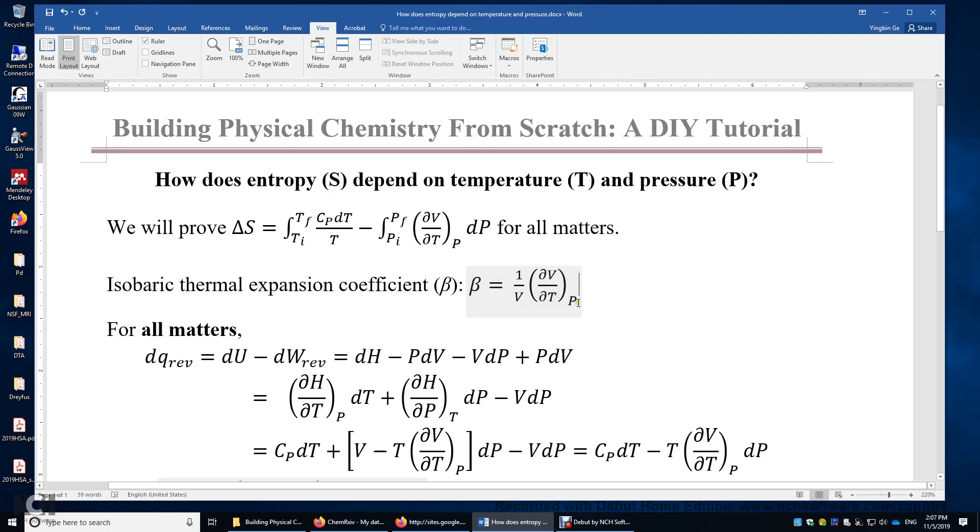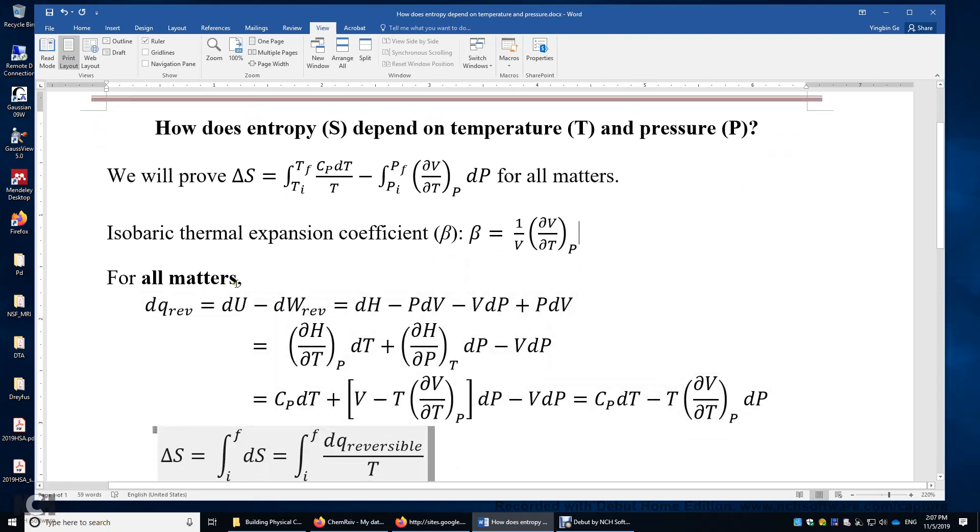With pressure being held constant. For all matters, DQ equals DU minus DW for a reversible process, and DU equals DH minus PDV minus VDP. DW reversible is negative PDV.